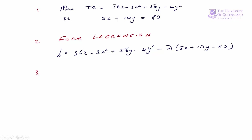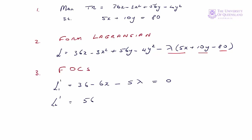Step three is to find the first order conditions. Differentiating the Lagrangian with respect to x gives L₁' equal to 36 minus 6x minus 5λ equals zero. The y terms are treated as constants here. Differentiating with respect to y gives L₂' equal to 56 minus 8y minus 10λ equals zero. The third equation states the constraint: 5x plus 10y equals 80. We number these equations 1, 2, and 3.